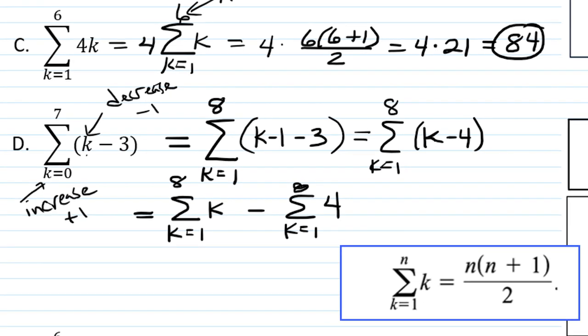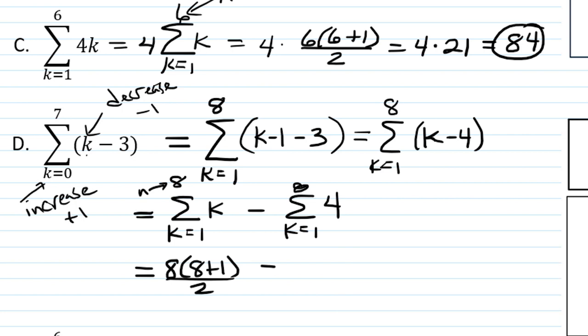All right, now we're going to use the rule that k equals 1 to n of k is n times n plus 1 over 2. In this case, our n is actually 8, so we will have 8 times 8 plus 1 over 2. And then on the right, that summation k equals 1 to 8 of 4 is the sum of a constant, so we're just going to have 8 times 4. So that's going to be, let's see, 4 times 9 is 36 minus 32, which equals 4.